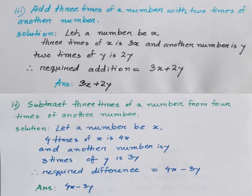Number 4: Subtract 3 times of a number from 4 times of another number. Just like number 3, we consider the first number x and the second number y. So let a number be x. 4 times of x is 4x. And another number is y. 3 times of y is 3y. Therefore, the required difference is equal to 4x minus 3y. Answer: 4x minus 3y.